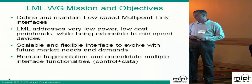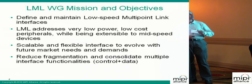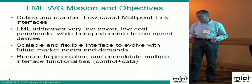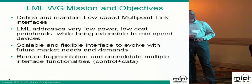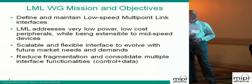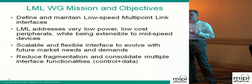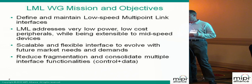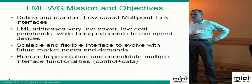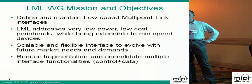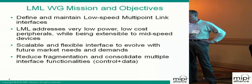So the scope of this LML group — low-speed multi-point voltage — is to address low-power, low-cost peripherals and low-speed use cases. What we're trying to do is to be extensible for future use cases and new peripherals that may come up. So we have to be scalable and flexible so as to be able to keep up with market demands.